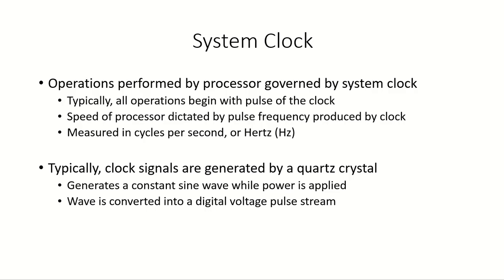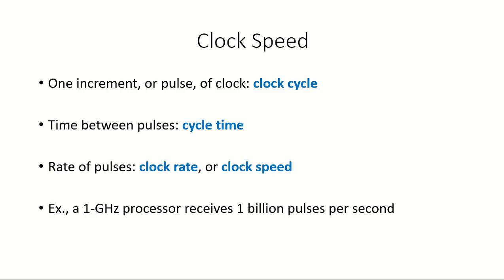When we talk about the performance of a processor, there is a system clock and all operations performed by the processor are governed by this clock. All operations begin with the pulse of the clock, and the speed of the processor is determined by the pulse frequency produced by the clock, measured in cycles per second or hertz. These clock signals are generated by a quartz crystal which produces a constant sine wave when power is applied, and this wave is converted into a digital voltage pulse stream.